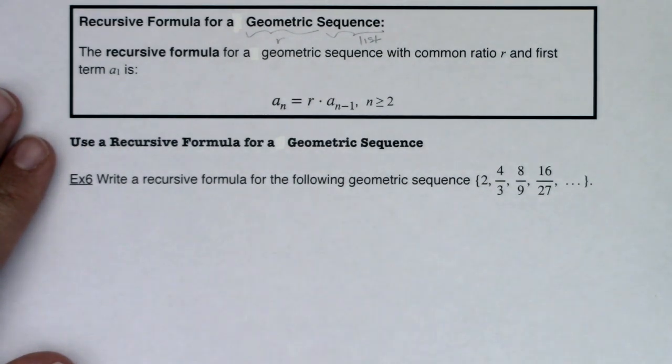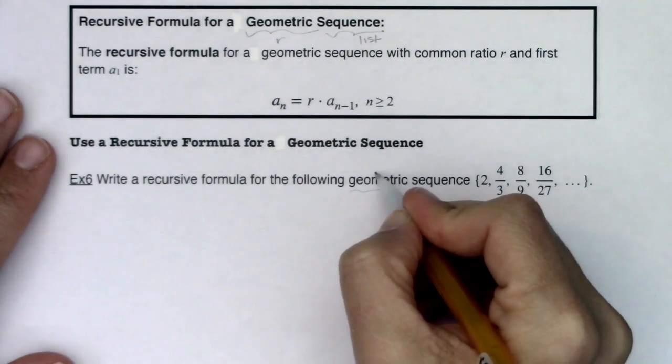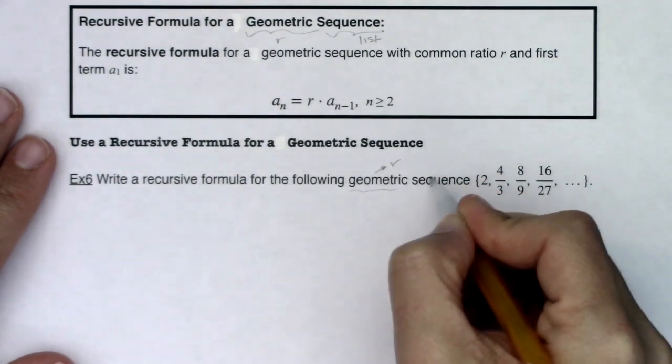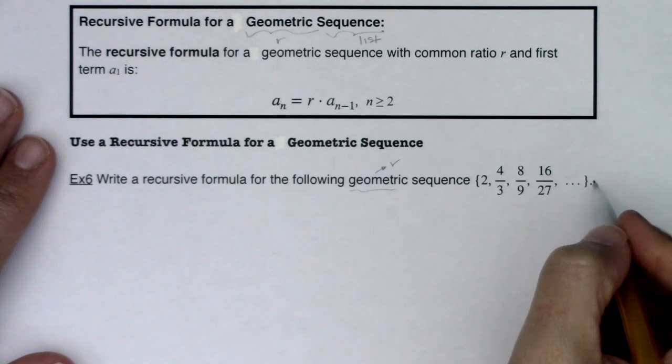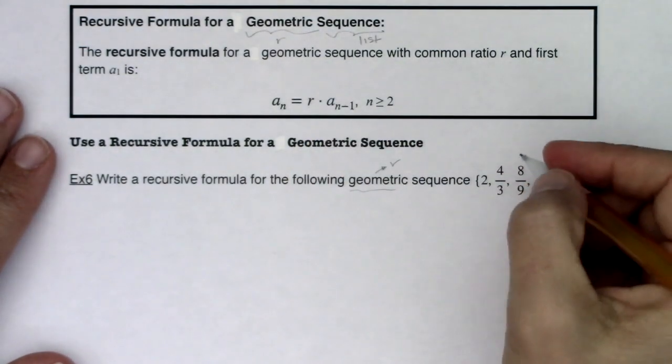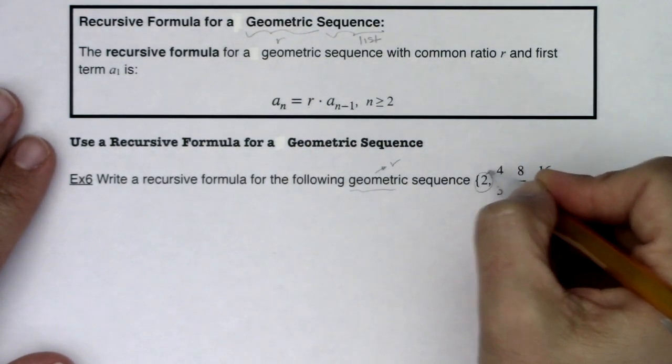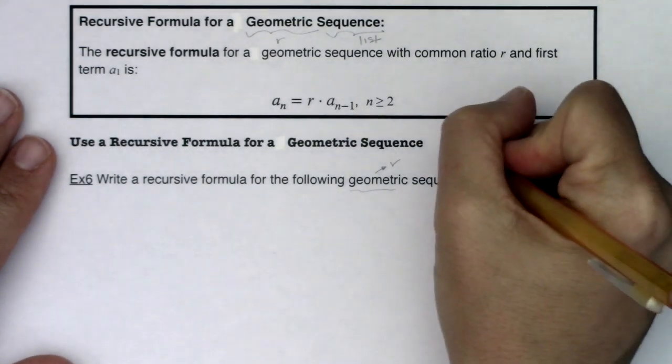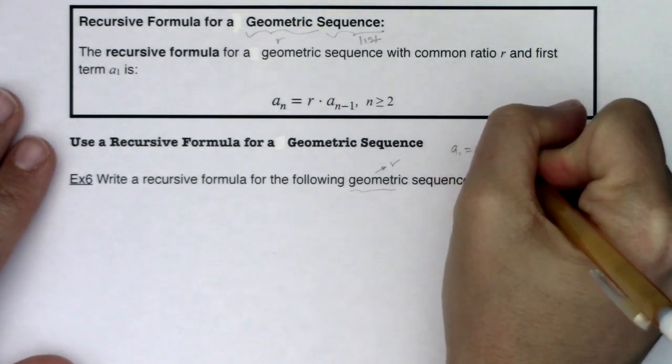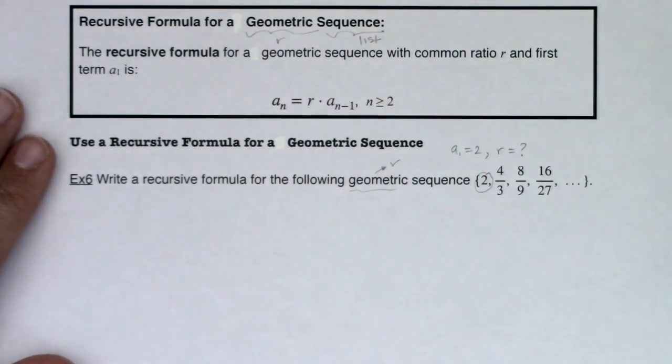So when it comes to something like this, I hear geometric so I'm thinking r. I hear sequence, I've got my list. The two most important things is I need my a sub 1 value, which I can see right there is 2. So I know a sub 1 equals 2, but we don't know what r is equal to yet, and that's very important when you're dealing with geometric sequences.